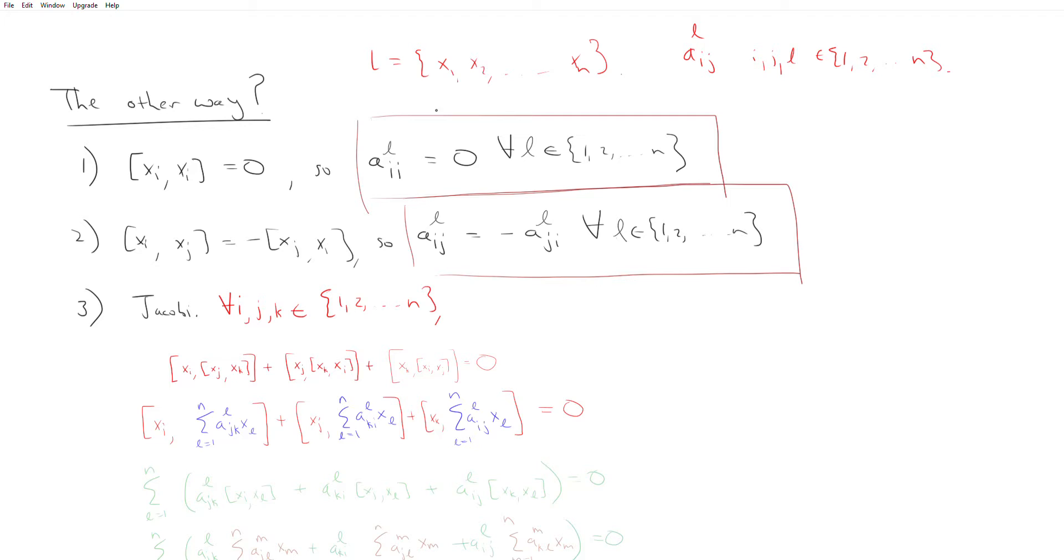And so it turns out that the answer lies in our axioms. So if you give me a Lie algebra that is spanned by, or rather, if you give me a set of structure constants that correspond to some n-dimensional Lie algebra, so you give me n cubed structure constants, a sub i, j, l,